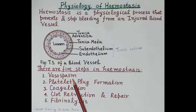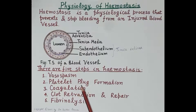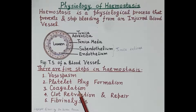The first step is vasospasm. If the wall of a blood vessel is injured, blood is going to escape from the injured vessel into the surrounding. Vasospasm or vasoconstriction constricts the blood vessel — the blood vessels become narrow — and this reduces blood loss. The second step is platelet plug formation: the platelets stick to each other, form a platelet plug, and this temporarily seals the injured site of the vessel wall.